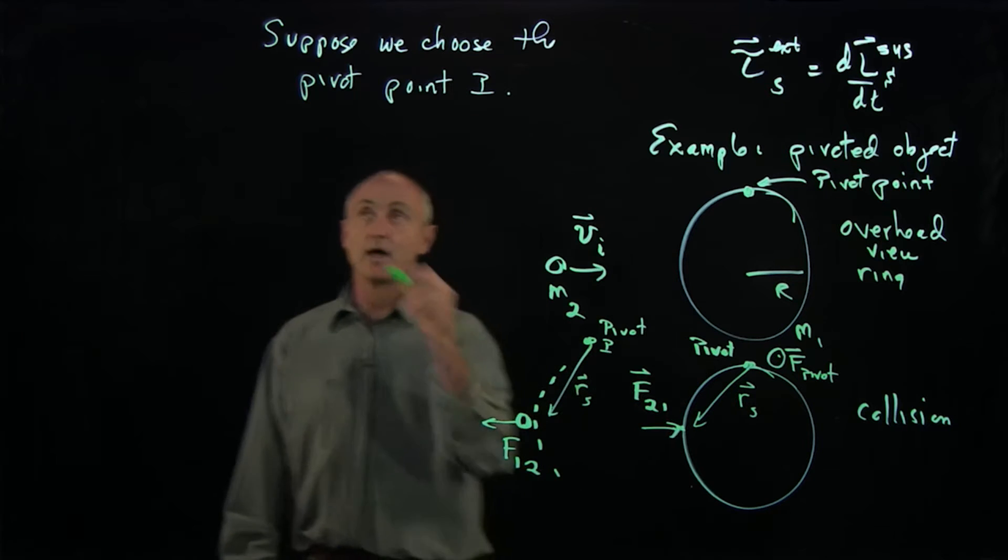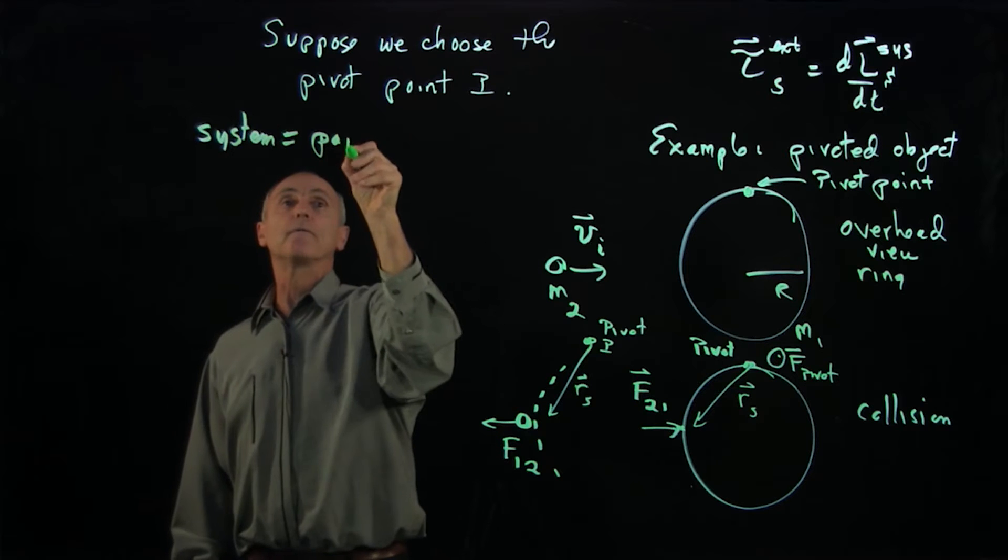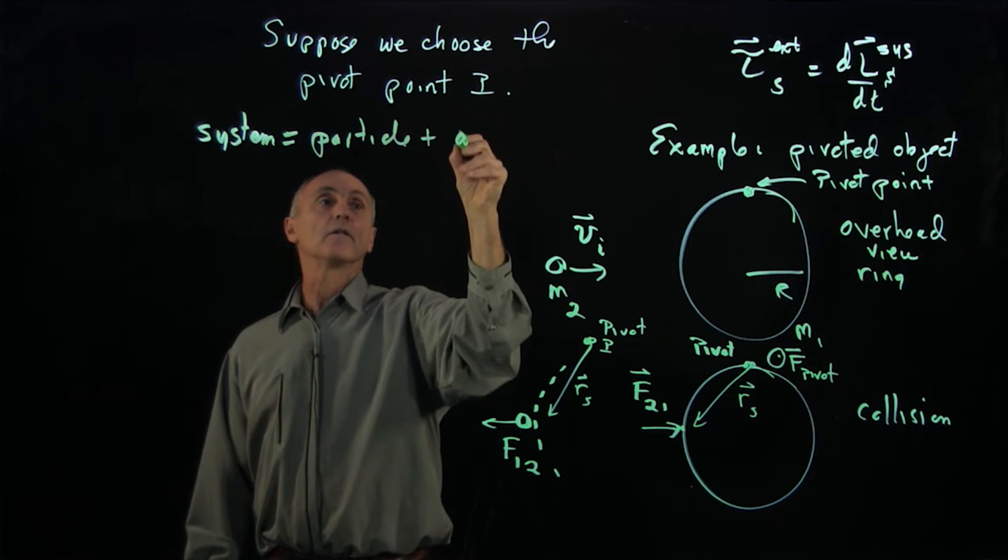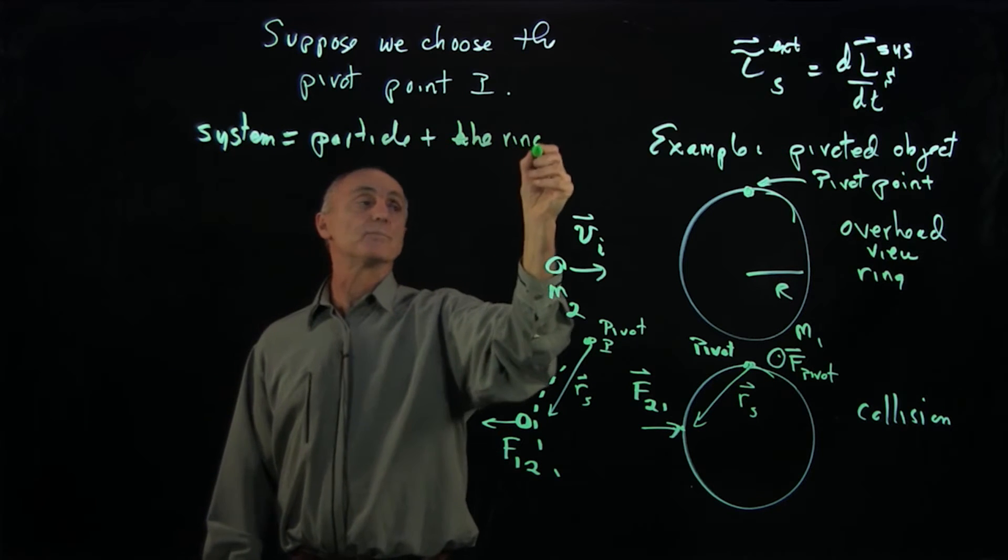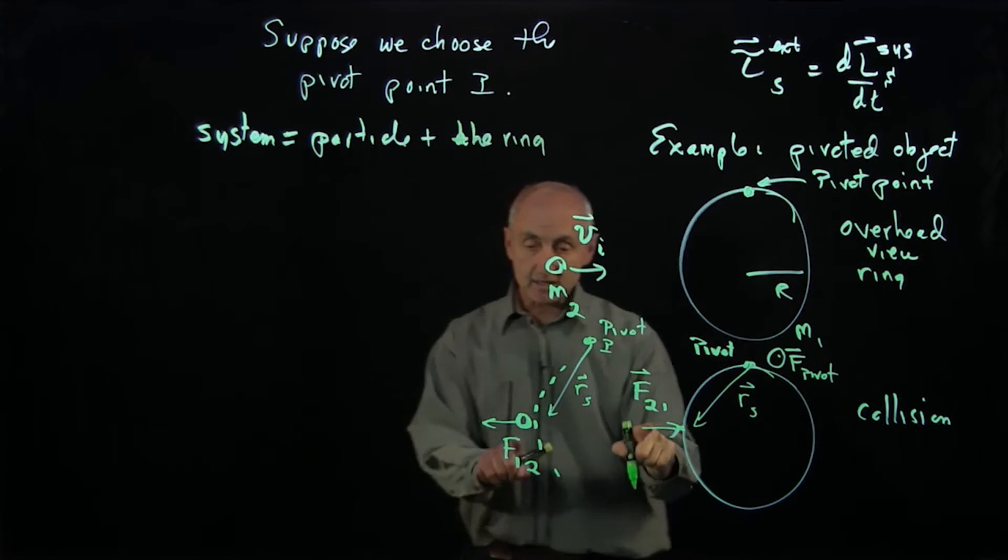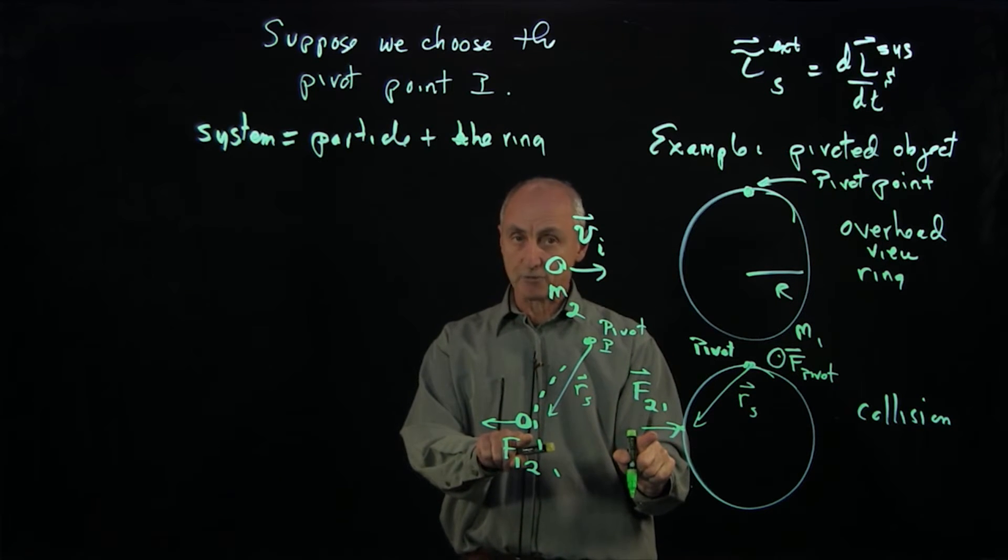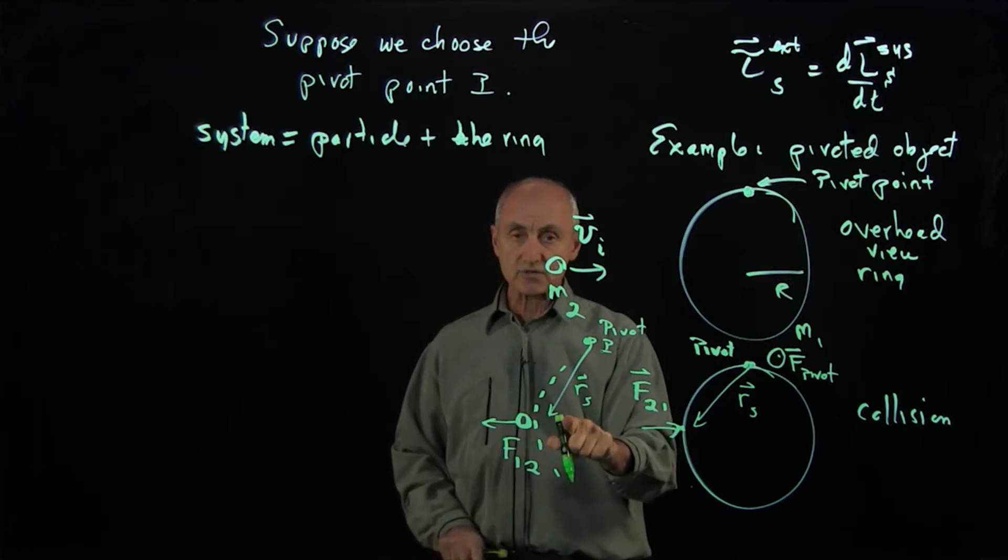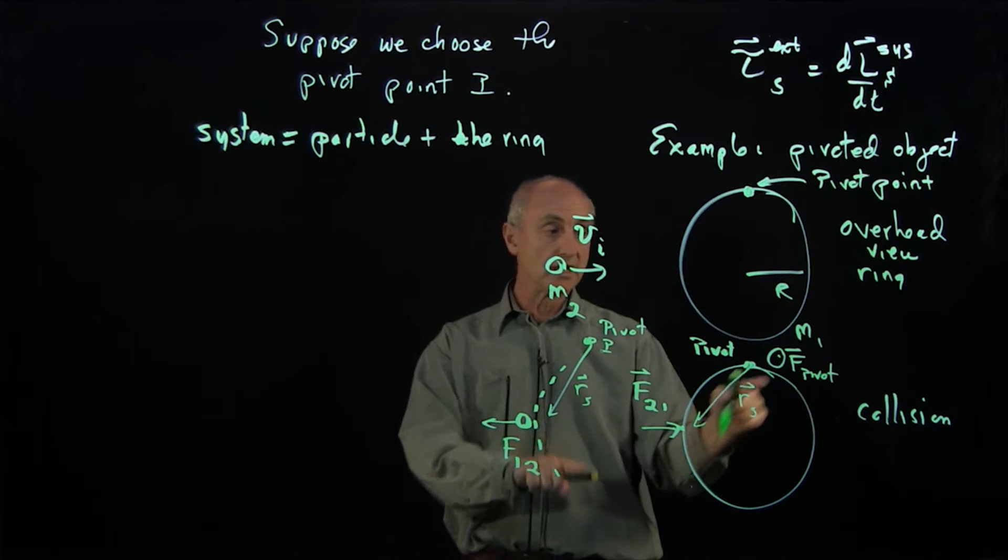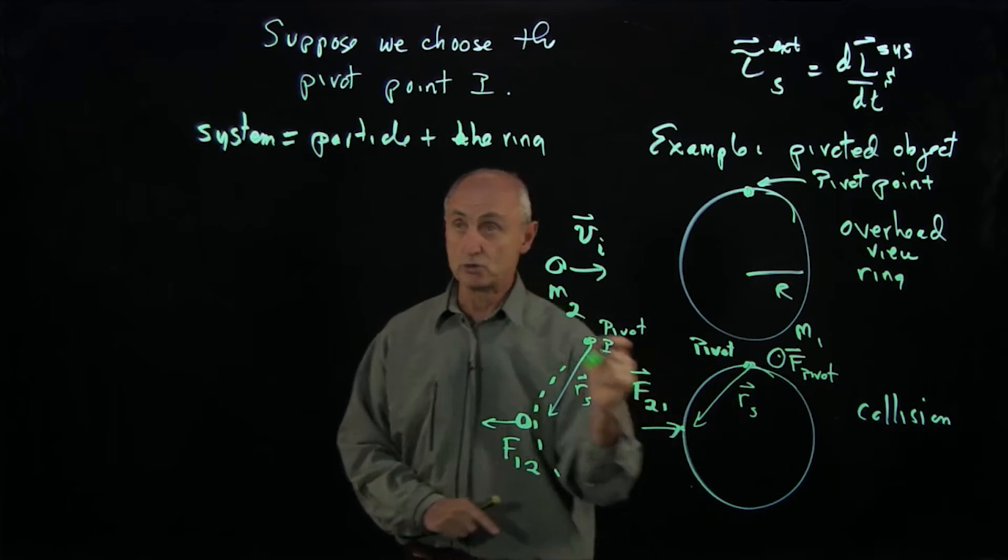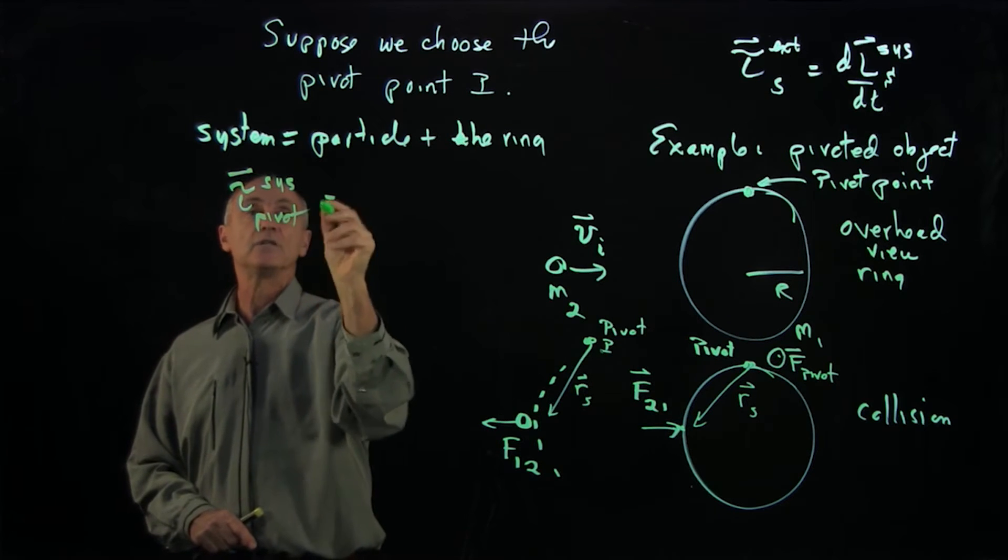This is the torque on the particle. But if we make our system equal to the particle and the ring, so we'll call this our system is now both the particle and the ring, then these torques are internal. And because they're equal and opposite forces, the RS vector is exactly the same RS vector. The internal torques cancel in pairs. The pivot force produces no torque. So the torque on the system about the pivot is zero.